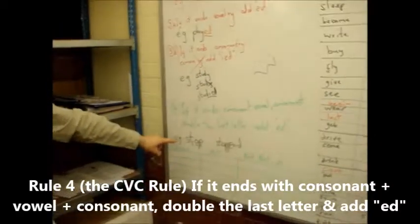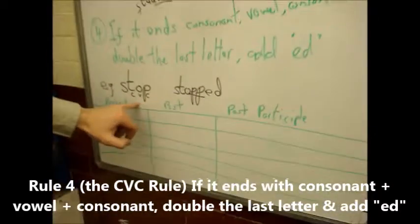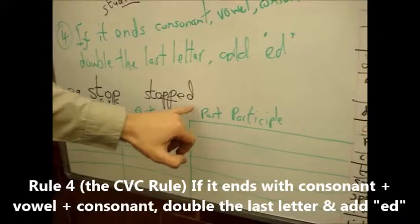And then of course you've got the CBC rule at the bottom. If it ends in consonant, vowel, consonant, you double the letter before you add ED.